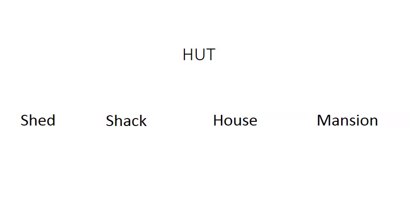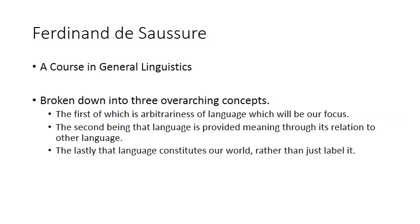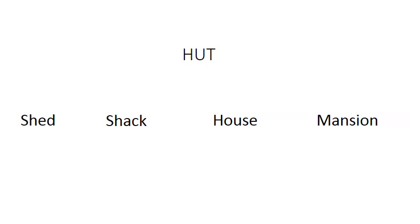I'm going to let Mercedes take on the second example. So the second concept is that language is relational. We can understand a word — or 'sign,' as Saussure calls it — as what it is because of what it's not. Going back to our example of 'hut,' we know what a hut is exactly because it's not a shed, shack, house, or mansion. Where a word like 'housing' might bring all of these images to mind, the word 'hut' is specific enough to distinguish the idea of hut from these other four, or any other forms of housing.